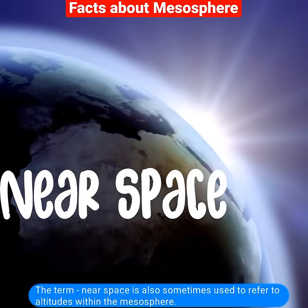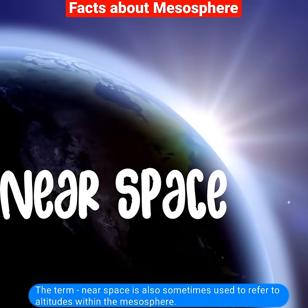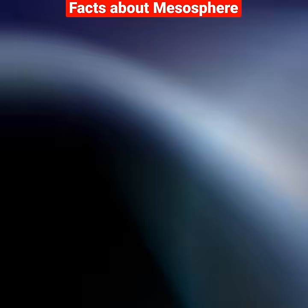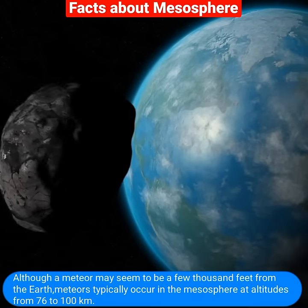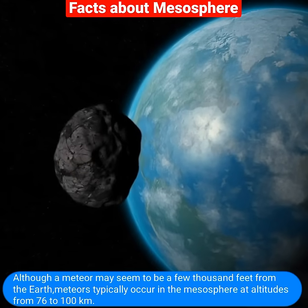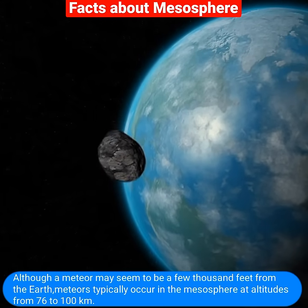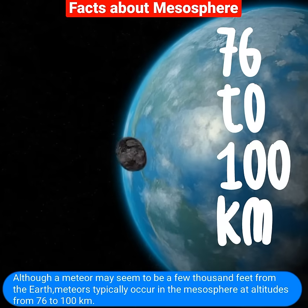The term near space is also sometimes used to refer to altitudes within the mesosphere. Although a meteor may seem to be a few thousand feet from the Earth, meteors typically occur in the mesosphere at altitudes from 76 to 100 km.